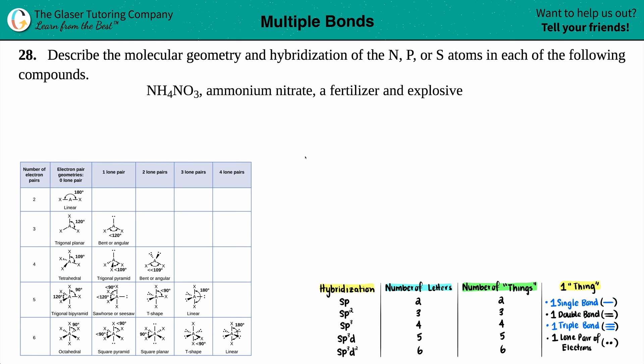Number 28: Describe the molecular geometry and the hybridization of the nitrogen, phosphorus, or sulfur atoms in each of the following compounds. We have NH4NO3, which is ammonium nitrate, a fertilizer and an explosive. You could either put this on your lawn or shoot fireworks in the air. All we have to do is find the molecular geometry and hybridization of specifically nitrogens, because there are no phosphorus or sulfur atoms.